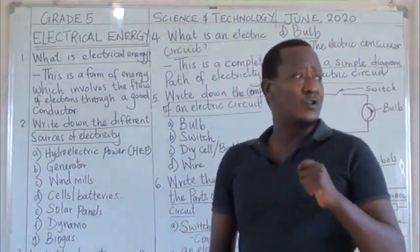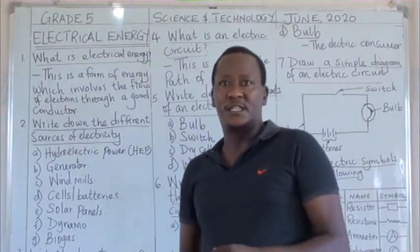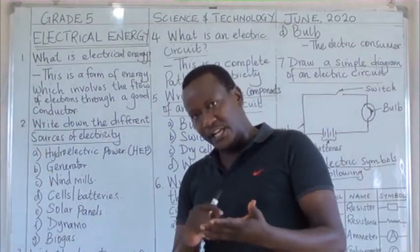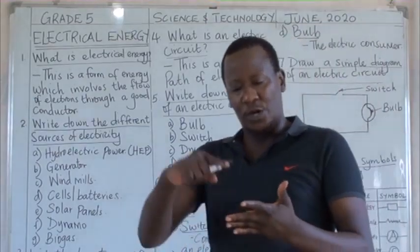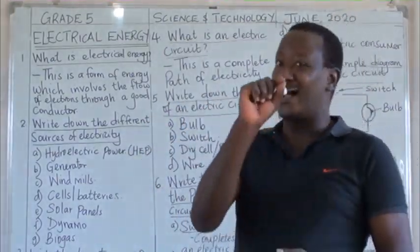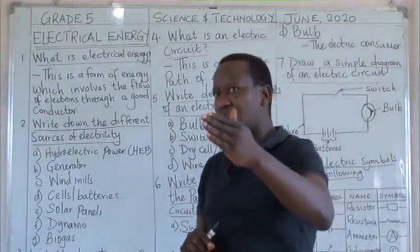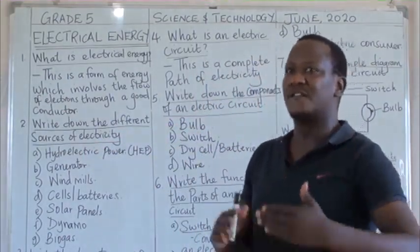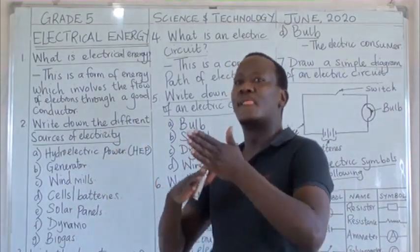we discussed about what we call types of energies. The different types of energies that we discussed were light energy, heat energy, sound energy, electrical energy, magnetic energy and many others. Previously we have been looking at light energy and we have seen different properties of light on different shapes, on different mirrors and lenses.